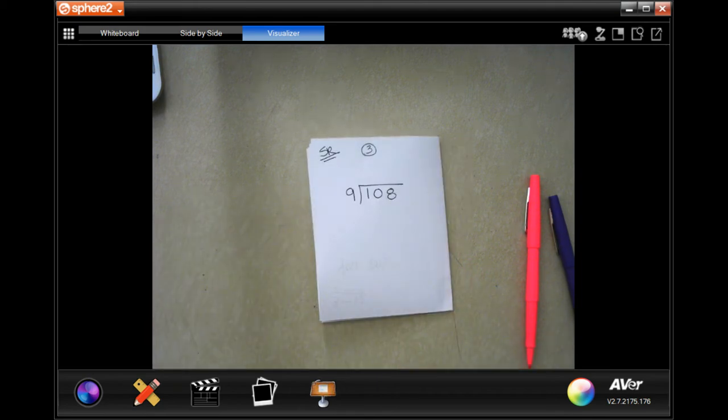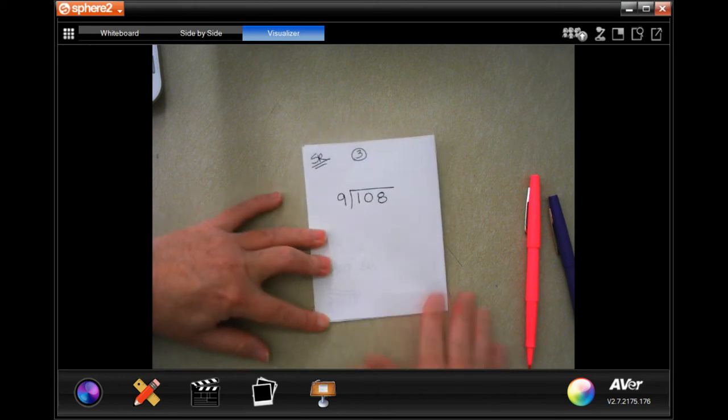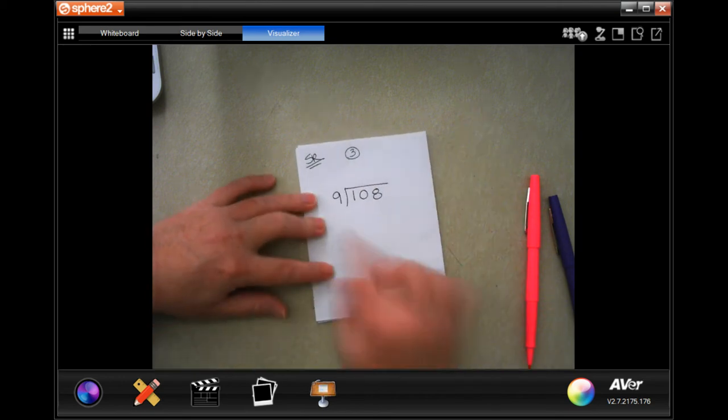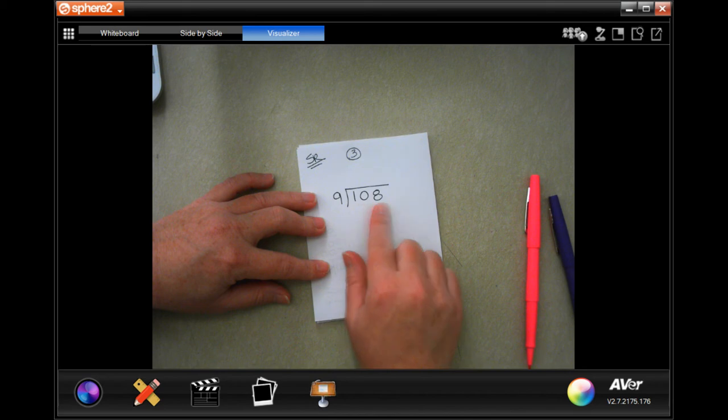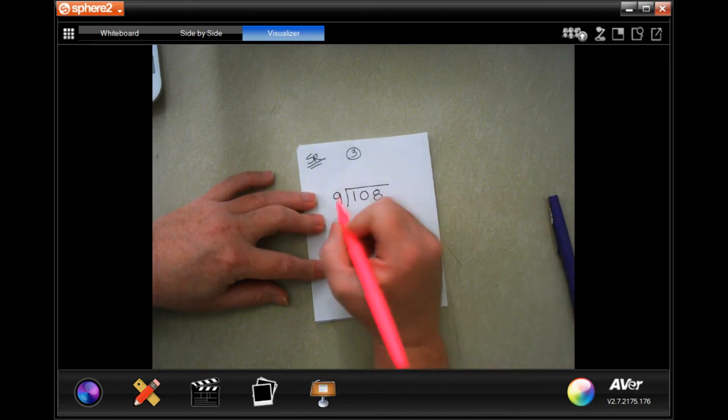Andrew can print 9 pictures each day. He has an order for 108 pictures. How many days will it take him to complete the order? So whatever the answer is, it's going to be in days. He has 108 pictures that he has to do, and he can do 9 a day. Let's do the math.